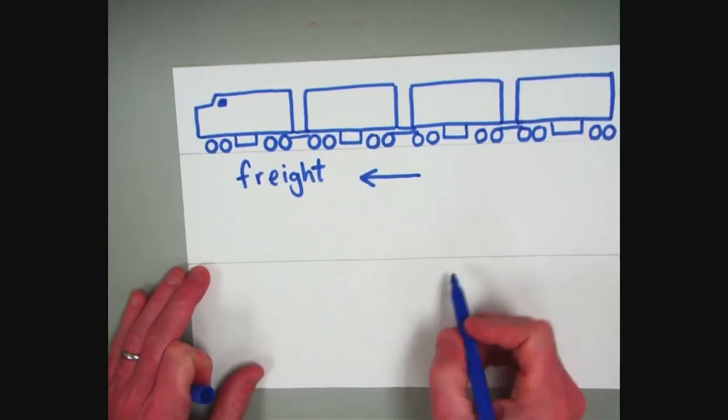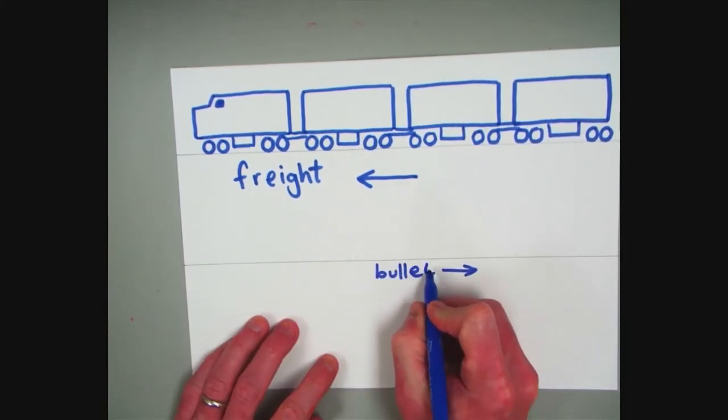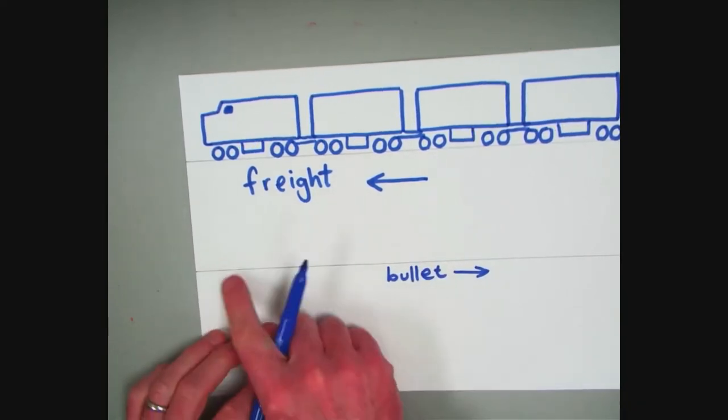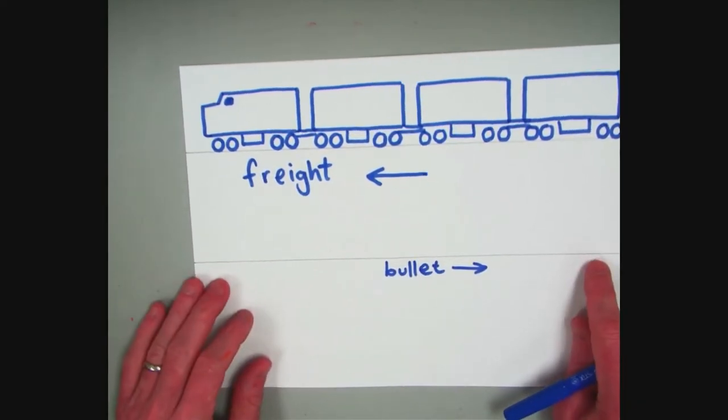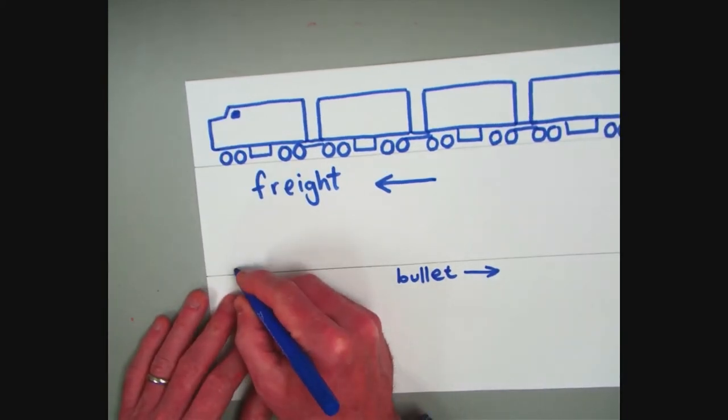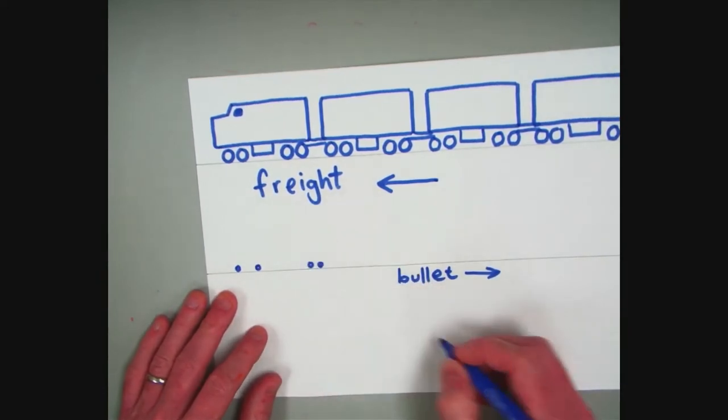To do the one I'm going to show you next, which is called a bullet train, you're going to have to think about it like this. Bullet trains are very fast, and because of that, they're very low to the ground. Everything about them is a little smaller than a freight train. Freight trains are carrying thousands and thousands of pounds of coal or whatever their freight is.